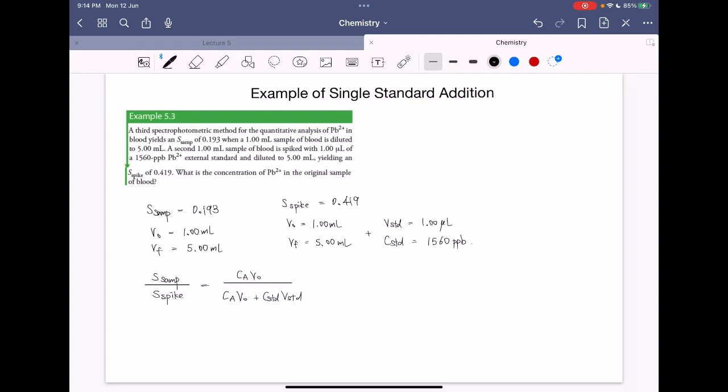But before we plug in the values, we need to know that the VSTD is significantly smaller than the sample volume. The standard we have is 1 microliter and this is a thousand times smaller than 1 millimeter.